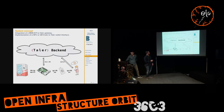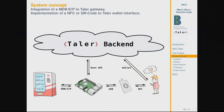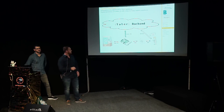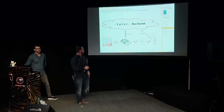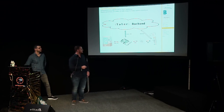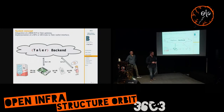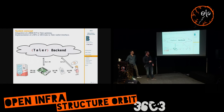So what was the concept? We have the Taler backend, which for us was like a black box — Christian and his developers handled that, and we just had the REST API to communicate with it. We took a computer and implemented the interface with the snack machine and an interface to communicate with the Taler wallet via NFC. The idea was to let the customer choose a product on the snack machine, get product information, make an order in the backend, pay via NFC to the customer's wallet, check if the purchase was confirmed, and then deliver the product.